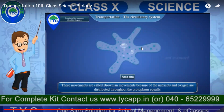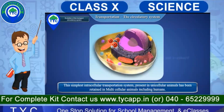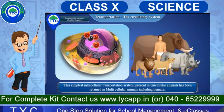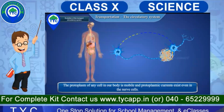You can see this amoeba and the fluid-like substance inside it. The reason it moves like that is so it can thoroughly distribute all the nutrients to all parts of its body. This intercellular transportation system is present in unicellular animals and has been retained even in large multicellular organisms like human beings, lions, and elephants. The protoplasm of any cell in our body is mobile.